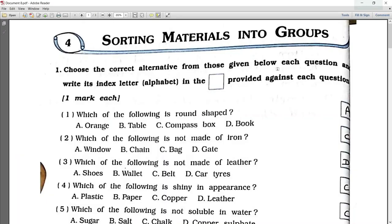Now question number 1 is on the base of MCQ. The first question is which of the following is round shape? So the answer is orange. Which of the following is not made of iron? So bag is not made of iron.